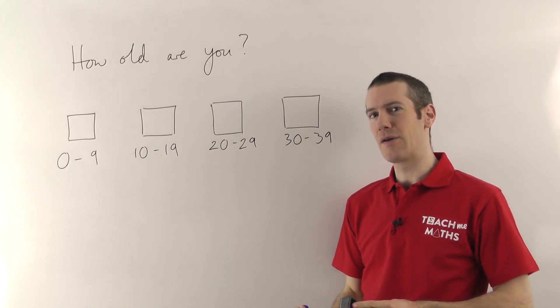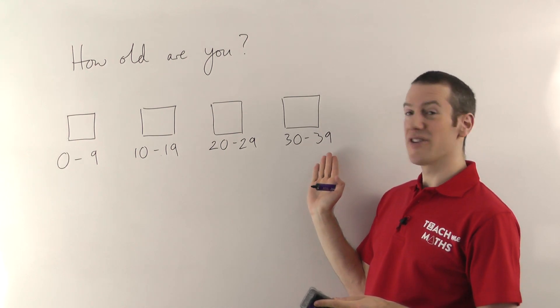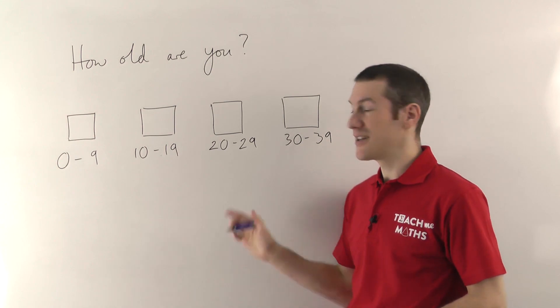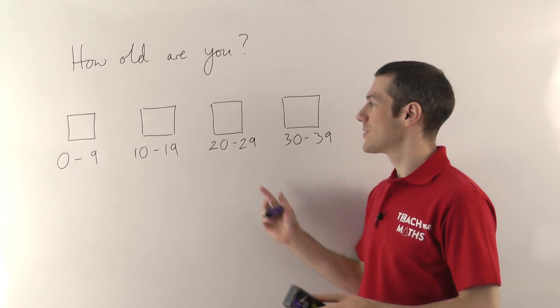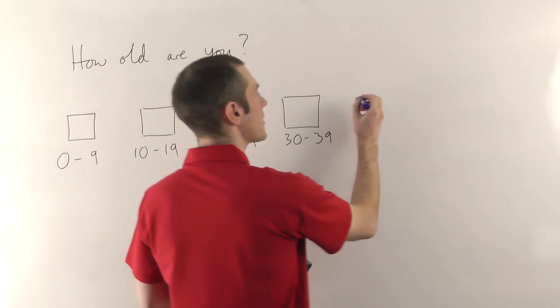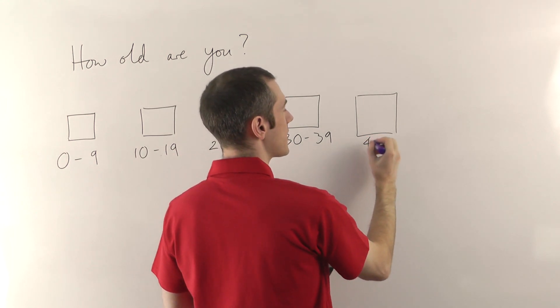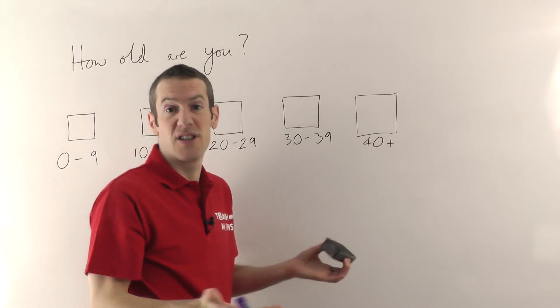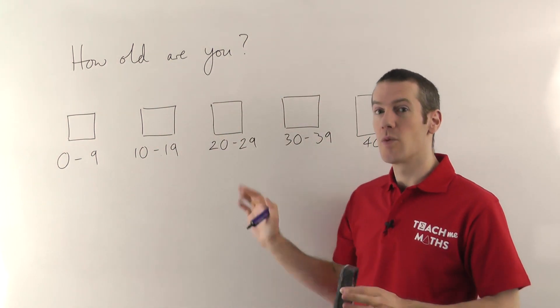There is another problem here though, maybe you've spotted it. If you're older than 39, 40 or more, you've got no box to tick. Now you need to make sure whoever's answering your question can tick a box. They've got to have an option somewhere. So in this case you would want to stick another box on. I mean you could have more ranges here or you could just stick 40 plus or something, and then that includes anybody who's 40 or older. So that's just a couple of things to bear in mind when doing your questions.